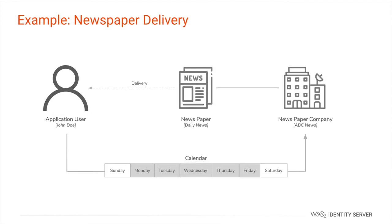To understand Access Delegation a bit more, let's take a few examples. Let's say you want to stop the newspaper being delivered on the days that you are not at home. You can do this by sharing a restricted view of your calendar with the newspaper company so that they can prevent newspaper delivery on the days that you are not at home.